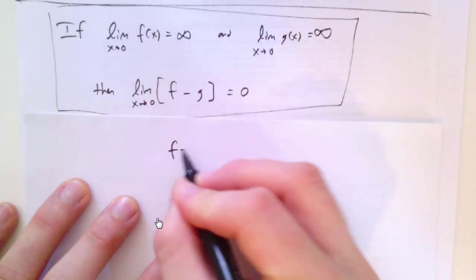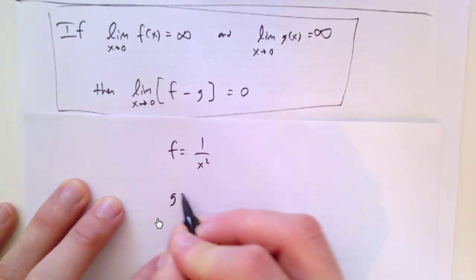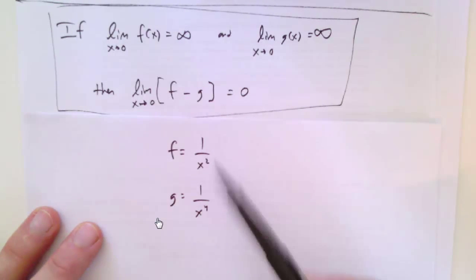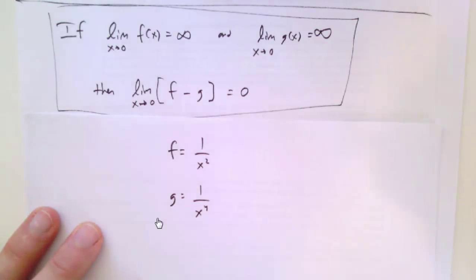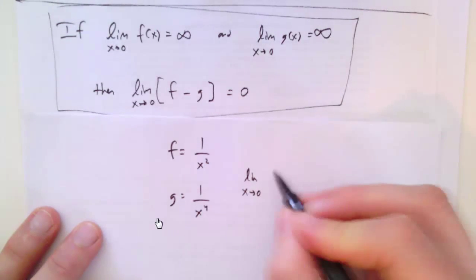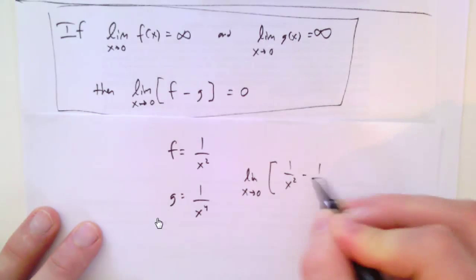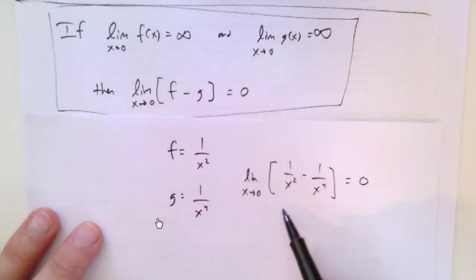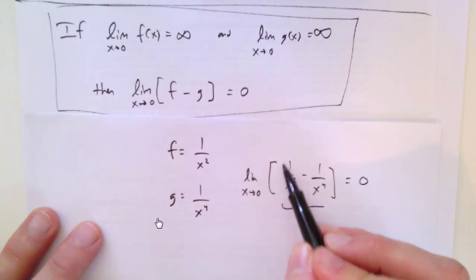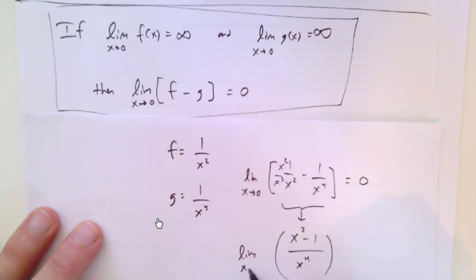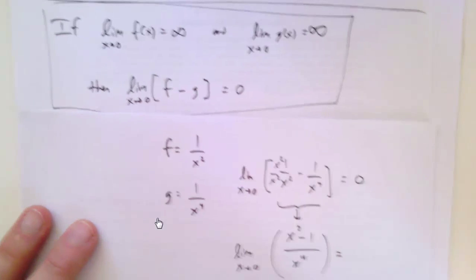Is there an example where this is shown to be false? Yes. Let's say F is 1 over X squared, and G is 1 over X to the 4th. As X approaches 0, each of these individually has a limit approaching infinity. So is the limit as X approaches 0 of 1 over X squared minus 1 over X to the 4th equal to 0? Let's multiply by X squared over X squared to combine them, giving X squared minus 1 over X to the 4th.